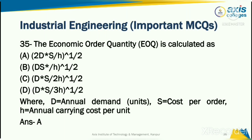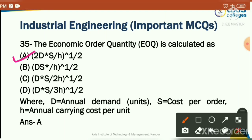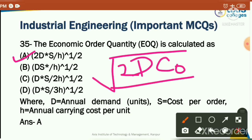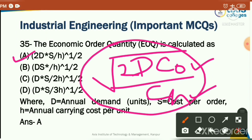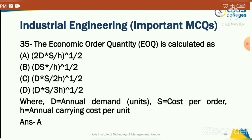The economic order quantity (EOQ) is calculated as: option A — under root of 2DS/H. Sometimes you can write it as under root of 2DC₀/Cₕ, where C₀ is the ordering cost and Cₕ is the holding cost or carrying cost. Remember this formula. The correct answer is option A. Links for parts one, two, and three are available in the description. Thank you.